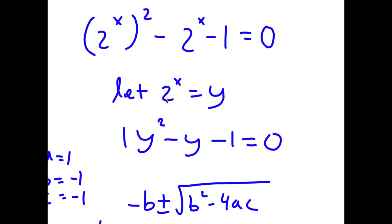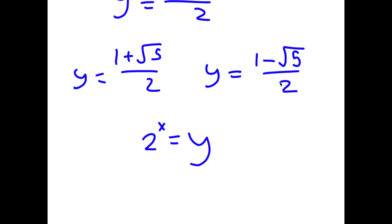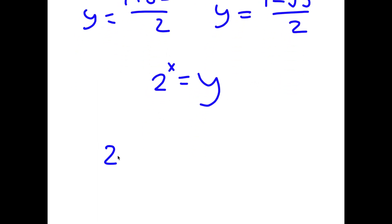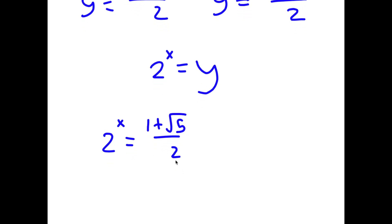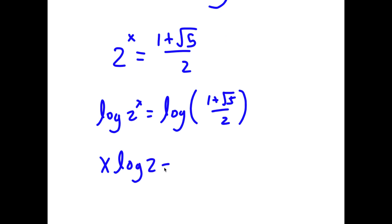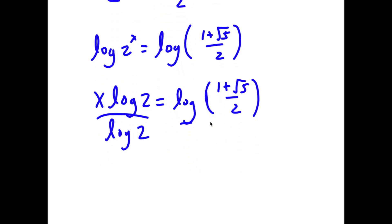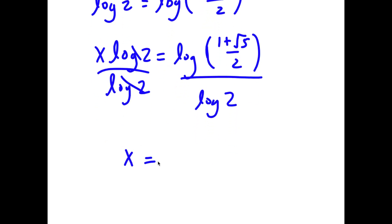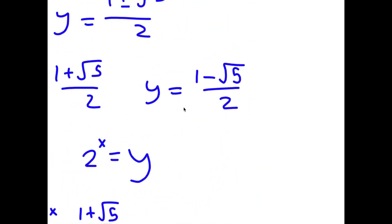Remember, we set 2 to the power of x equal to y. So setting 2 to the power of x equal to 1 plus the square root of 5 over 2, I take the log on both sides. Then x times log 2 equals log of 1 plus the square root of 5 over 2. Dividing both sides by log 2 gives x equals log of 1 plus the square root of 5 over 2, divided by log 2. For y equals 1 minus the square root of 5 over 2, that's a negative number, and 2 to the power of any number cannot be negative. So that solution is rejected, and the only solution is x equals log of 1 plus the square root of 5 over 2, divided by log 2.